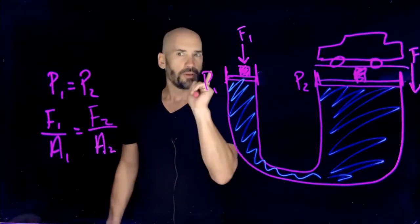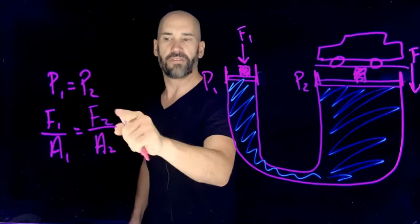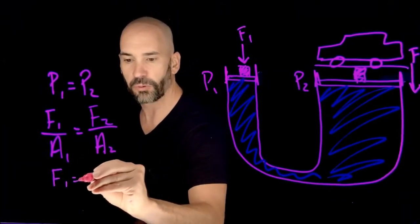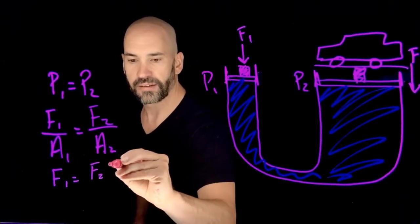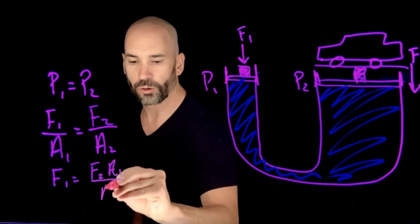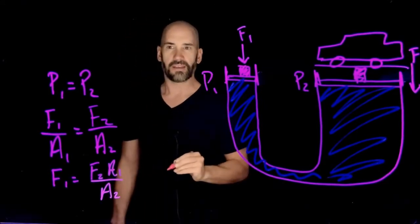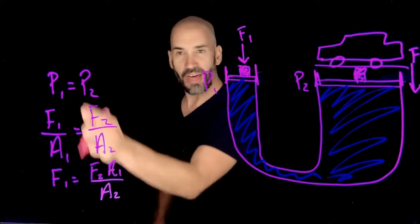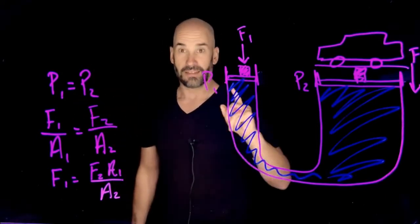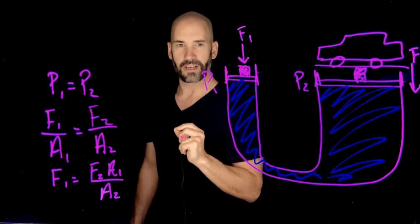So let's go ahead and solve this for F1. So this would mean that F1 equals F2 times A1, all over A2. That's just a bunch of numbers and letters, but what does it really mean?